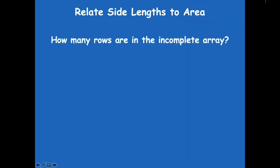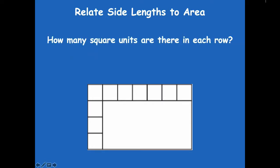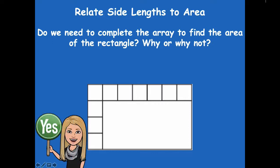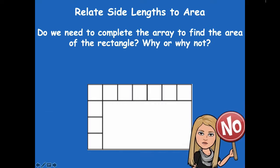All right friends, how many rows are in this incomplete array? Remember the rows are what's going side to side across. There's four rows. How many square units are there in each row? There's seven square units in each one. Do we need to complete the array to find the area of the rectangle? Why or why not? We sure don't have to do that.